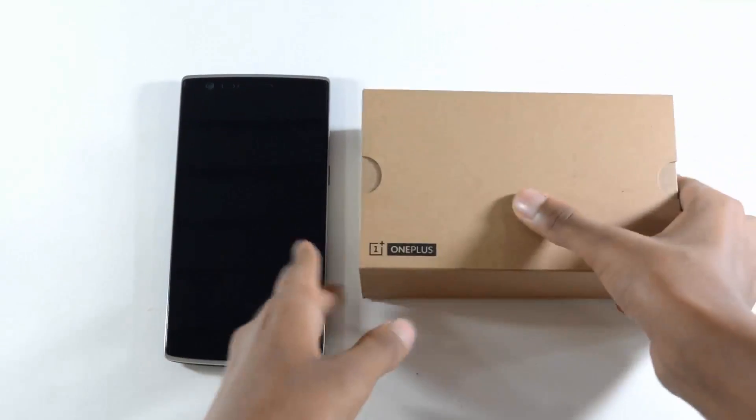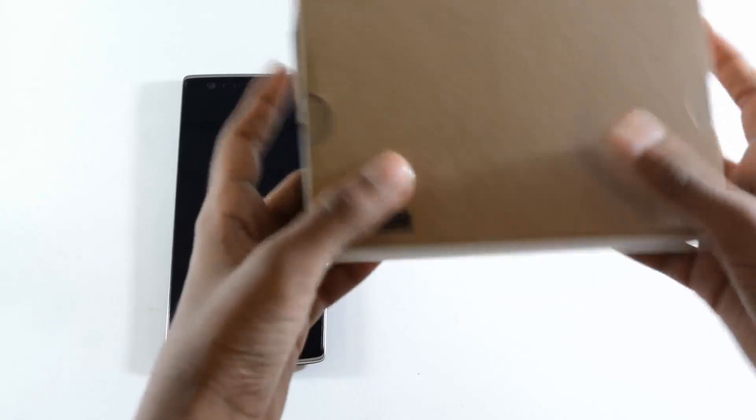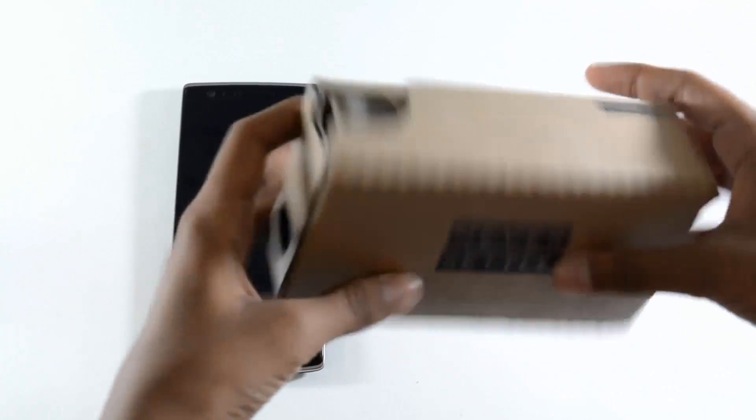Yo, it's Tech Dude here and I got my hands on the OnePlus Cardboard. Let's just do a quick unboxing. You have the hashtag 'Never Settle,' a button on the top, a Velcro on the left,